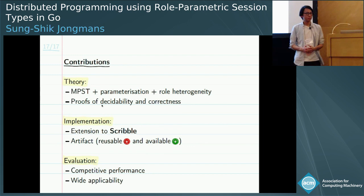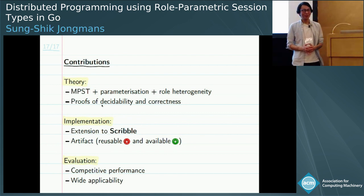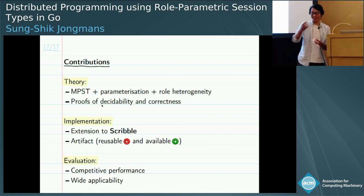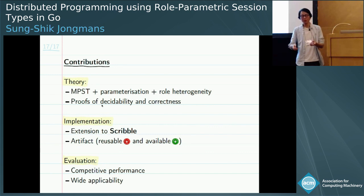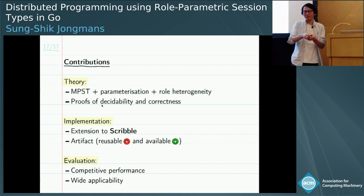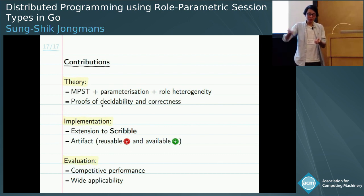Another question from Slido: how do you deal with replication in the global type? If replication means sending a value of the same type to a number of replicated processes, we can handle that. You express in the global type that you send the message — it's basically like a scatter pattern: you send the message to a number of processes that have the same communication behavior and are replicated. We can express that, but the exact semantics depend on the specific kind of replication intended.